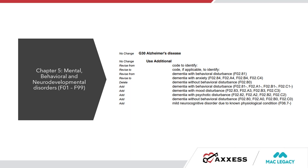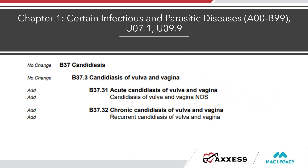The B37 category in Chapter 1 under Infectious and Parasitic Diseases has been updated to add specific codes for candidiasis of the vulva and vagina — we didn't have specific codes for those before. In Chapter 2, there should be C61 malignant neoplasm of the prostate listed. The wording changed from 'code to identify' to 'code if applicable' for hormone sensitivity status or rising PSA — acknowledging that information may not always be available.